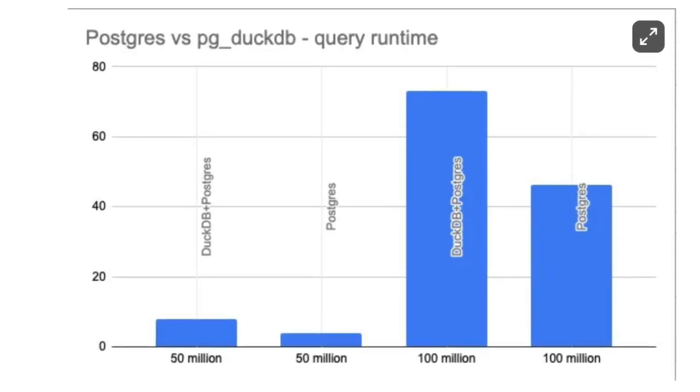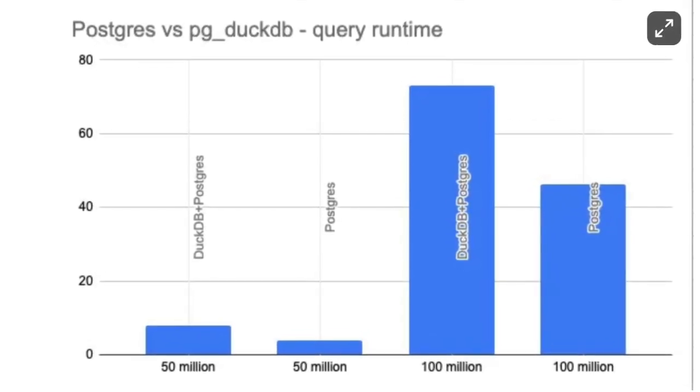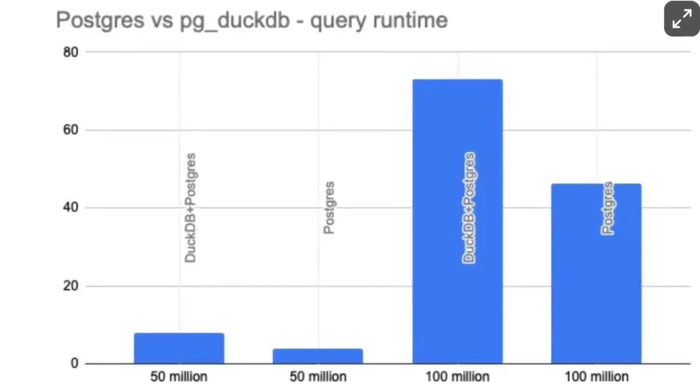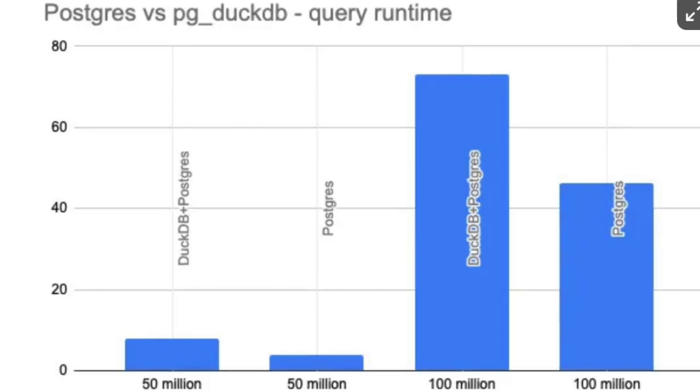I thought maybe it's a scale thing — what if I do 100 million records? Maybe as the dataset gets bigger, Postgres slows down and DuckDB gets faster. So I doubled the dataset to 100 million records and ran it again. Postgres did slow down to 46 seconds on that same query. But then forcing the DuckDB plan — it was 72 seconds. So even at double the data size, Postgres was still a lot faster. I threw together a chart showing that at both 50 million and 100 million records, Postgres with a supporting index is way faster.